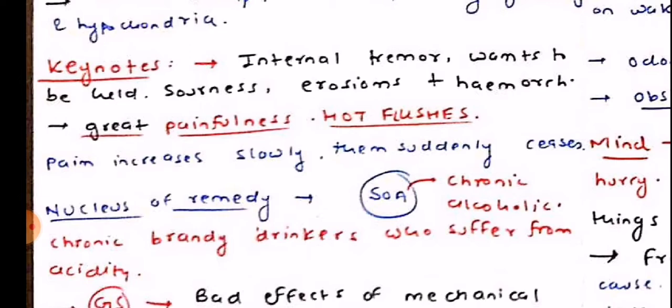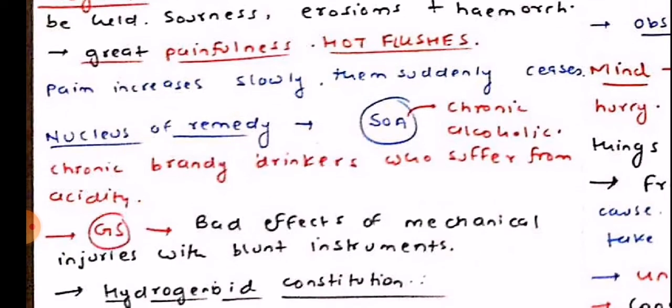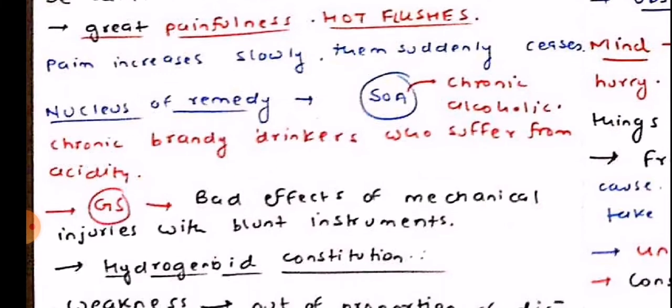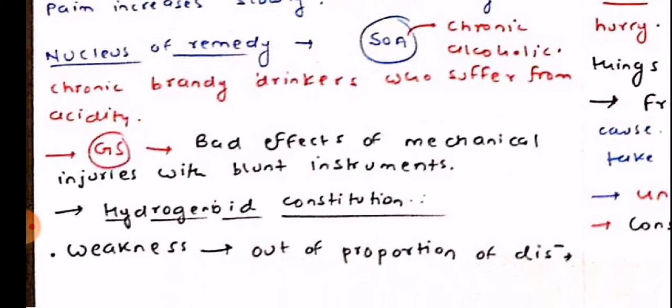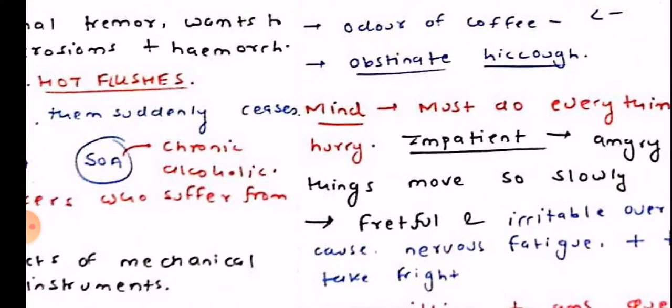Great painfulness and hot flushes; pain increases slowly then suddenly ceases. The nucleus of the remedy contains the chronic heavy drinkers who suffer from acidity. The sphere of action is that of chronic alcoholics. The guiding symptoms include bad effects of mechanical injuries with a blunt instrument. The constitution is of the hydrogenoid type.